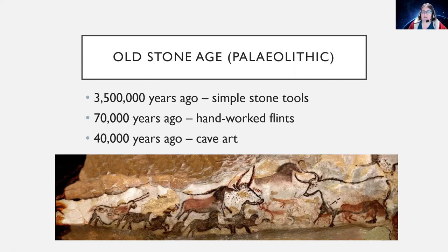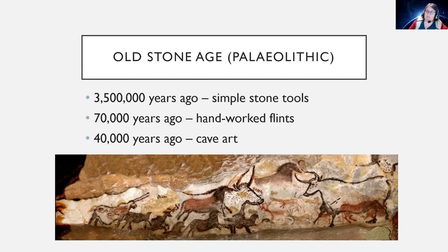This presentation mostly focuses on Britain, because that's the bit of prehistory I know the best. The timing of these ages can vary depending on which part of the world we're talking about. There wasn't much going on in Britain in the Old Stone Age, partly because a lot of it was covered by a huge ice sheet, and the bits that weren't are now underwater — Doggerland, for example.